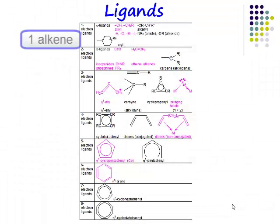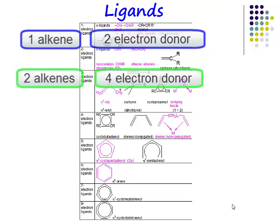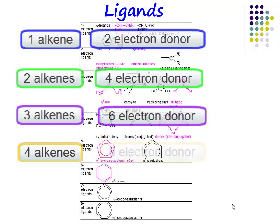Now if you've got one alkene, it's a two electron donor. If you've got two alkenes, it's a four electron donor. If you've got three alkenes, then it's a six electron donor. And if you've got four alkenes, then that's going to be an eight electron donor.